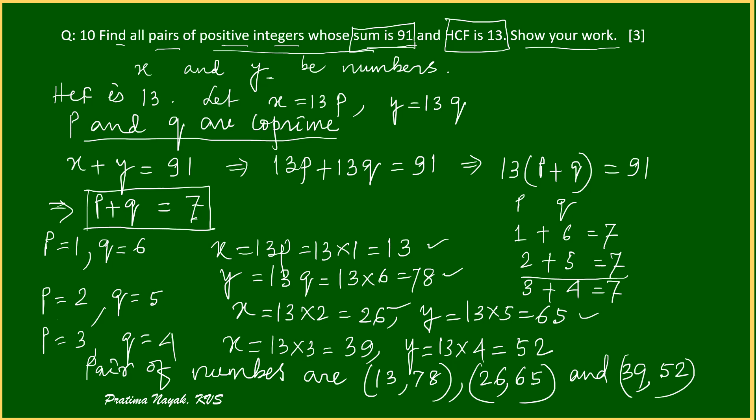So up to getting your P plus Q is equal to 7, you are getting one mark. And getting these values you will get another one mark. And for writing all the pairs you will get one mark. So total is 3 marks.